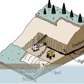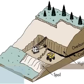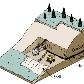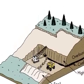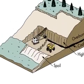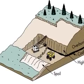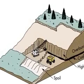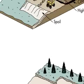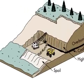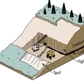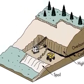Contour mining also works exactly as it sounds. Instead of digging a straight strip of land as in area mining, contour mining digs into the side of a hill to create a level area to extract the coal.